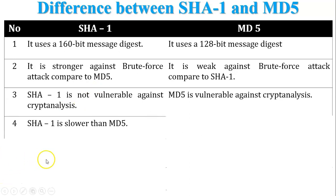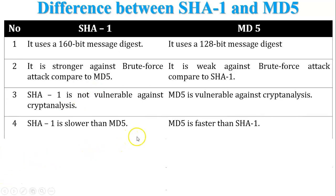SHA1 is slower than MD5, and MD5 is faster than SHA1.